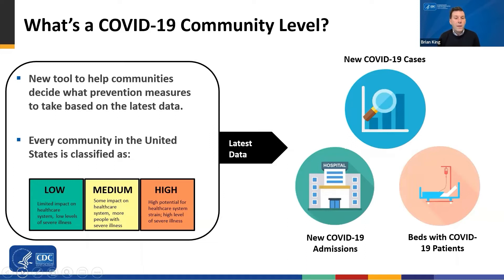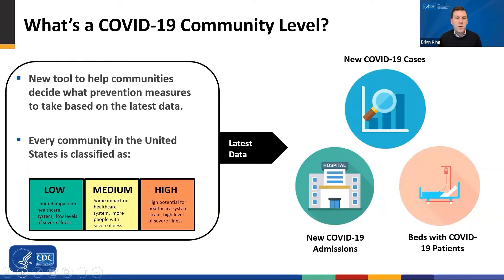Of note, the COVID-19 community level is going to be based on the higher of the two when it comes to the new admissions and the hospital bed metrics. But this is a straightforward, streamlined system that helps document the key levers that will inform recommendations when moving between levels — low, medium, or high — as the COVID-19 pandemic continues to evolve.